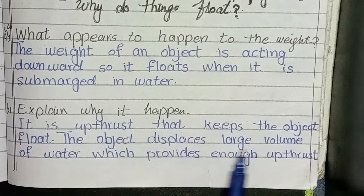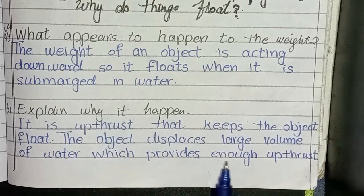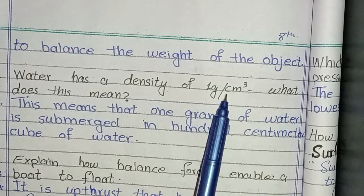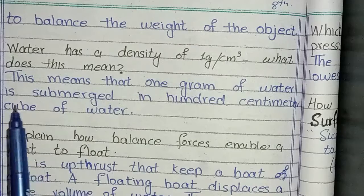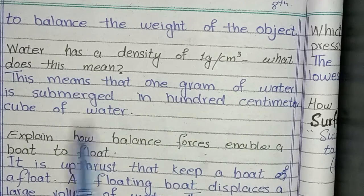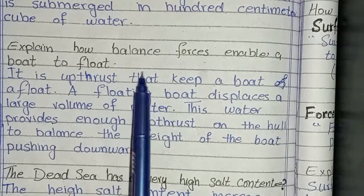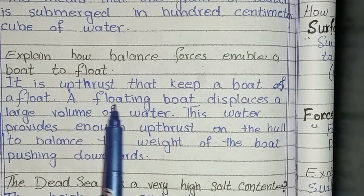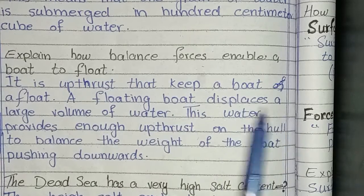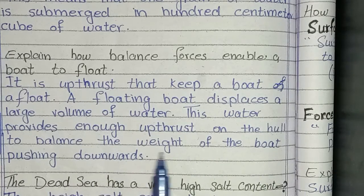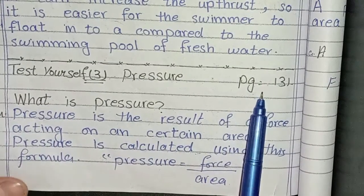The object displaces a large volume of water which provides enough upthrust to balance the weight of the object. Water has a density of 1 gram per cubic centimeter. This means that one gram of water occupies 1 cubic centimeter. Explain how balanced forces enable a boat to float: it is upthrust that keeps a boat afloat. A floating boat displaces a large volume of water, which provides enough upthrust on the hull to balance the weight of the boat pushing downward.